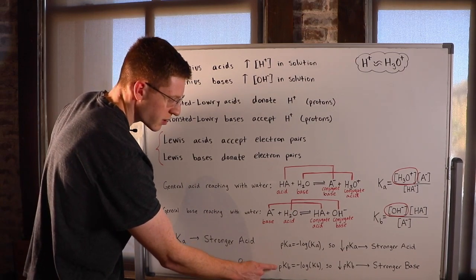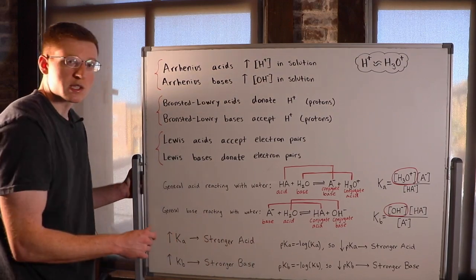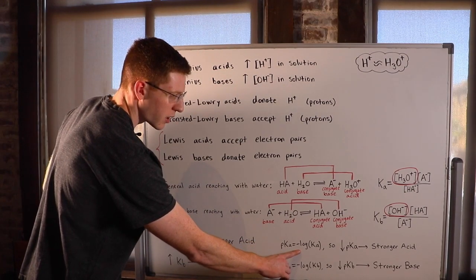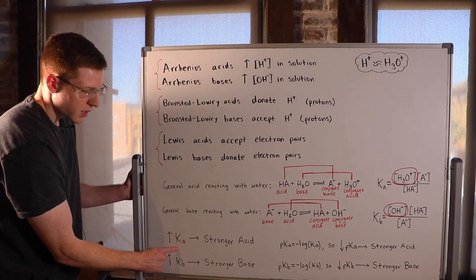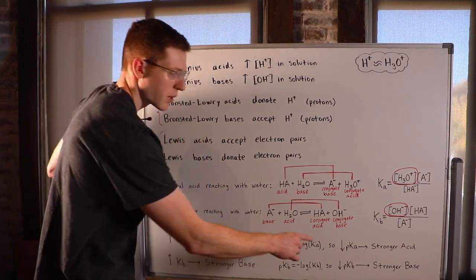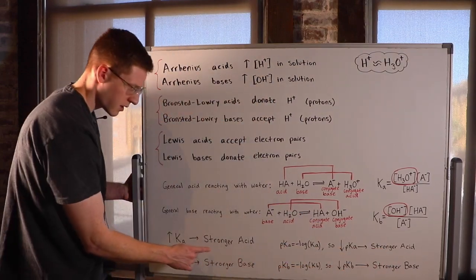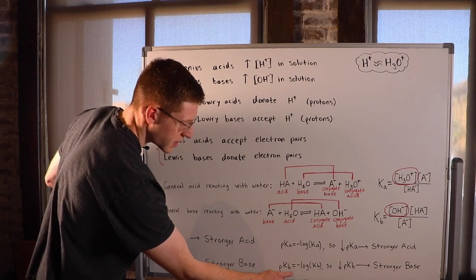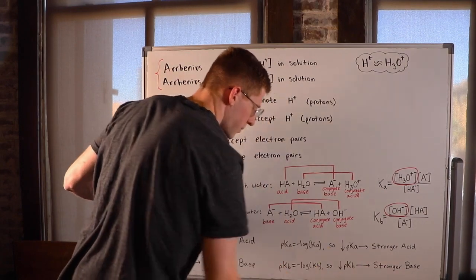And we actually have some associated definitions here, pKa and pKb. p means negative log of. So pKa is the negative log of Ka. You can think about when Ka gets bigger, pKa is actually going to get smaller. So it's tricky, but a small pKa actually corresponds to a stronger acid. And pKb, the same thing. pKb is negative log of Kb. So the smaller the pKb, the stronger the base.